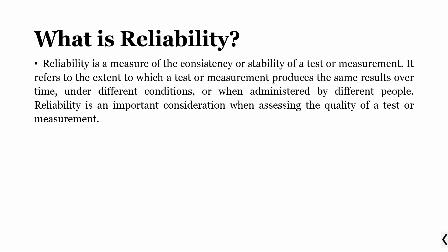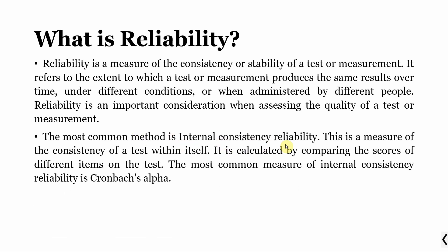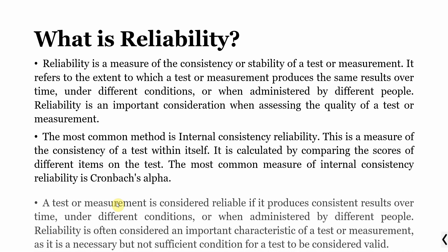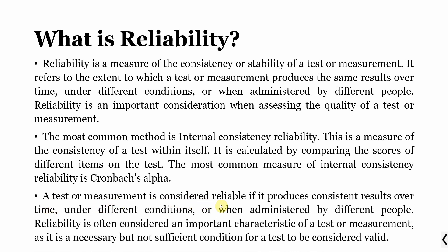Now this measurement would be reliable if it produces the same results over time, that is when it is used in different time periods, under different conditions, and when administered to different people. Reliability is an important consideration when assessing the quality of a test or measurement. The most common method is internal consistency reliability, which is a measure of consistency of a test within itself. It is calculated by comparing the scores of different items on the test, and the most common one is Cronbach's Alpha. A test is considered reliable if it produces consistent results over time, under different conditions, or when administered to different people.